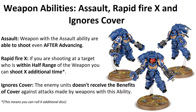Rapid Fire. You'll usually see a rule called Rapid Fire X, where X represents a number. The weapon has a range — for example 24 — and when the enemy unit you're shooting at is within half range, so within 12, you can add an additional number of shots equal to X.